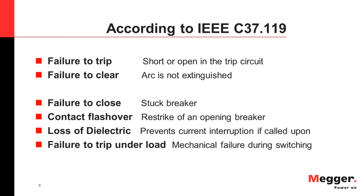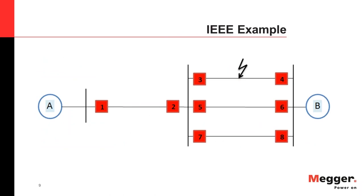Failure to Trip means a relay issues a trip and energizes the tripping coil for the breaker, but due to a short or open in the trip circuit or some mechanical problem, the breaker is unable to trip. Failure to Clear means the tripping coil is energized, the breaker is opening, and the 52A contacts get picked up, but the arc is not extinguished — that is also classified as a Breaker Failure.